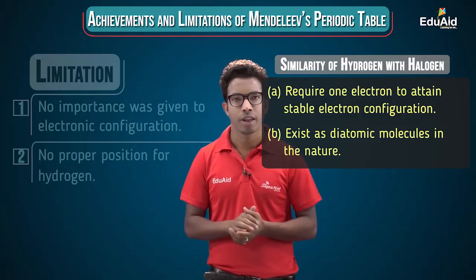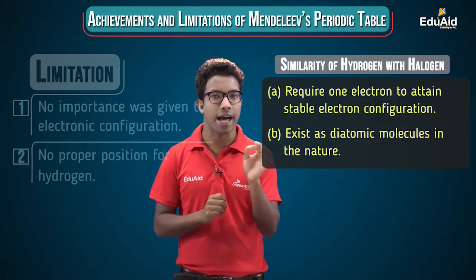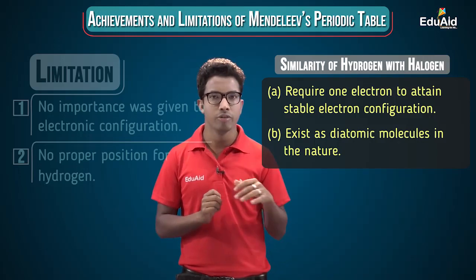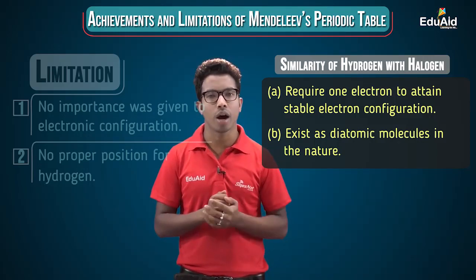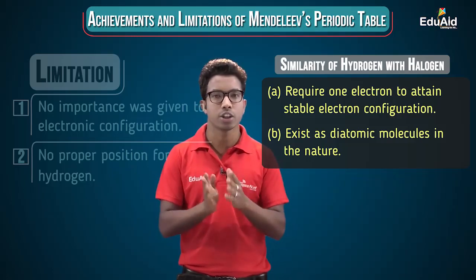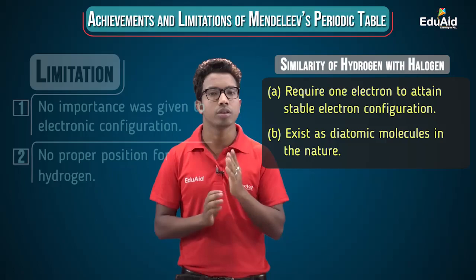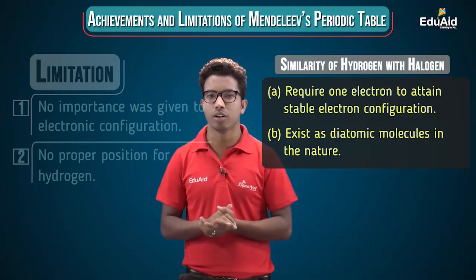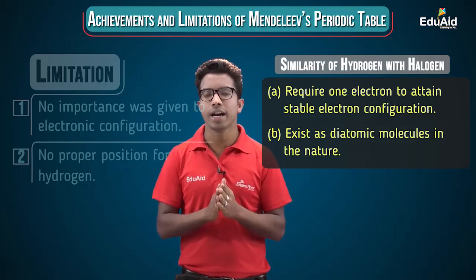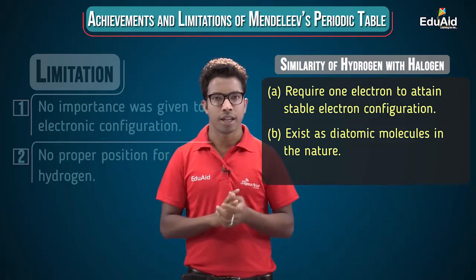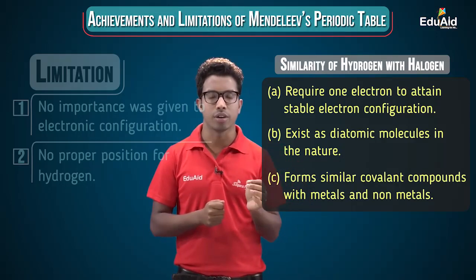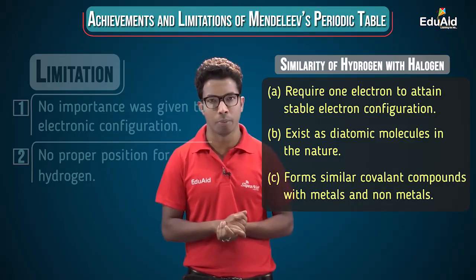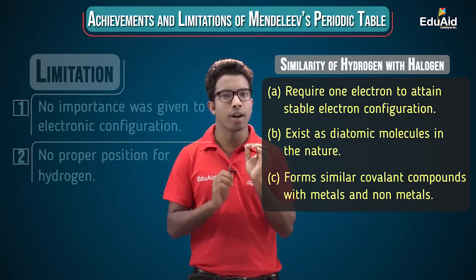Another similarity: hydrogen exists in our environment as H₂ — a diatomic molecule — not as a single H atom. Similarly, all halogens also exist as diatomic molecules: Cl₂, F₂, Br₂, I₂. Additionally, hydrogen and halogens both form similar kinds of covalent compounds with metals and non-metals.